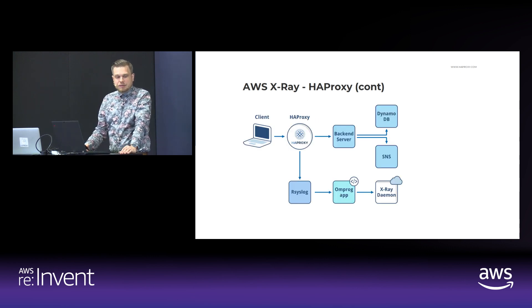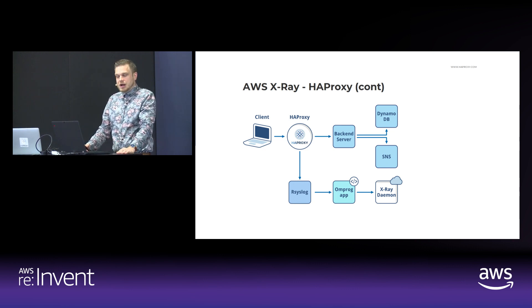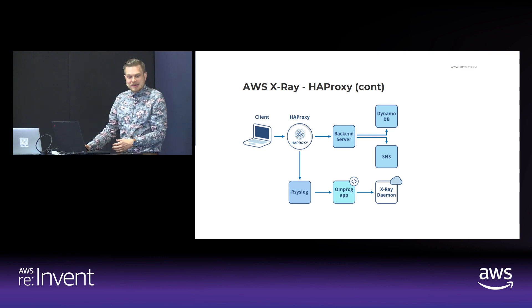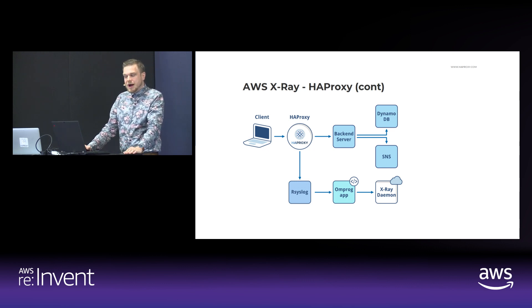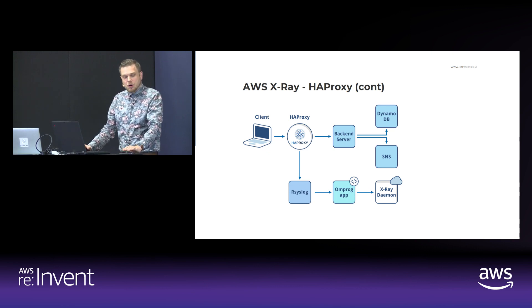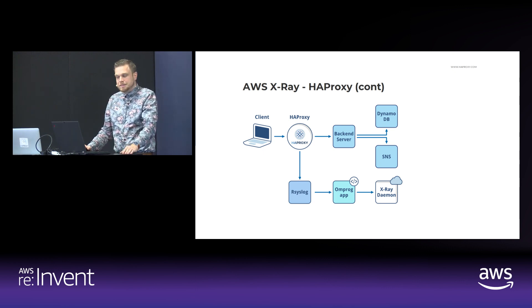Here's a diagram of how this would look. The client comes in, flows through HAProxy, which goes on to the back-end application server, where the application server calls its application-specific dependencies — in this example DynamoDB and SNS. Once the request has been completed, HAProxy sends the request log to syslog, which then pipes to our omprog application. The omprog application parses out the data from the request log — all the timing data, as well as the session termination states — and then sends that over to the local X-Ray daemon.